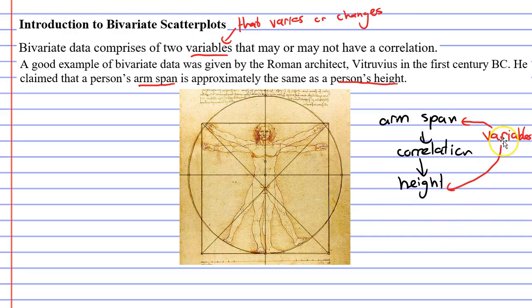The reason we call them variables is because they vary or change depending on which person we're looking at. Every person we look at has a different height or different arm span. You'll notice we have a picture here, and this was drawn by Leonardo da Vinci, and he named it after this architect, Vitruvius.